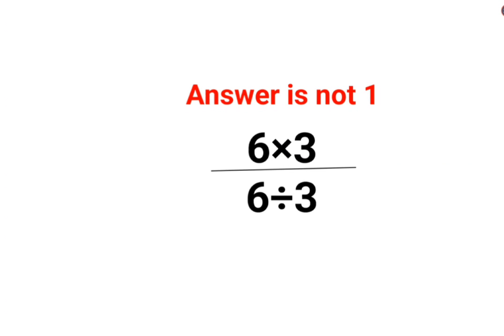Welcome everyone. So yes, people thought that this is so easy, right? 6 and 6 gets cancelled, this and this gets cancelled, answer is supposed to be 1. No, that is not how things work in mathematics.